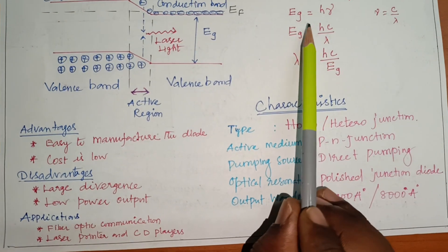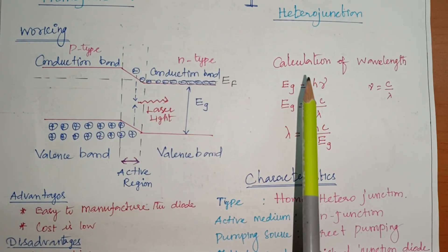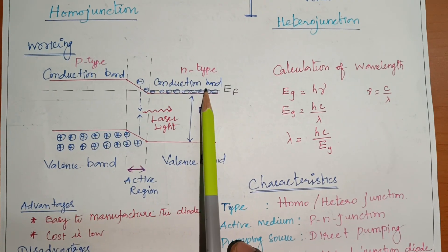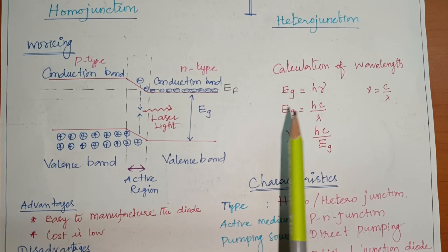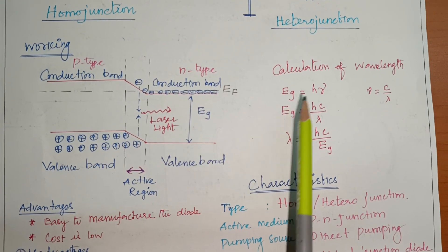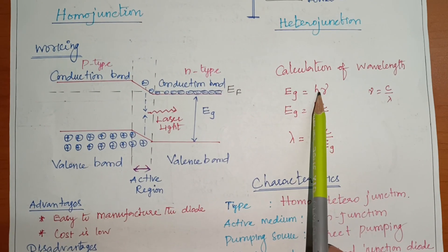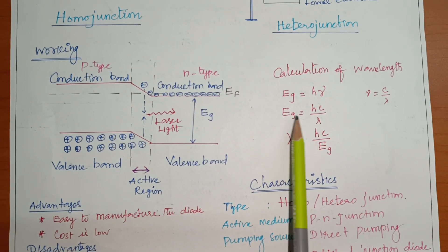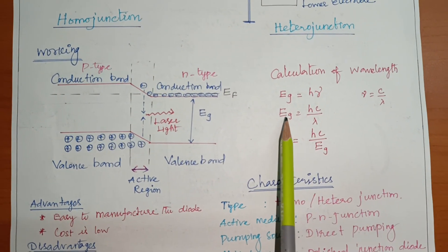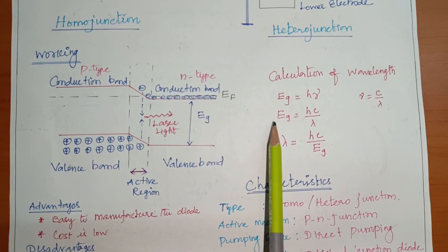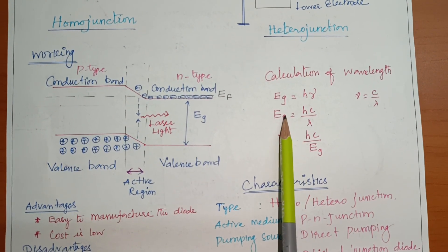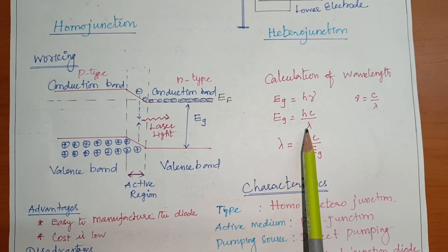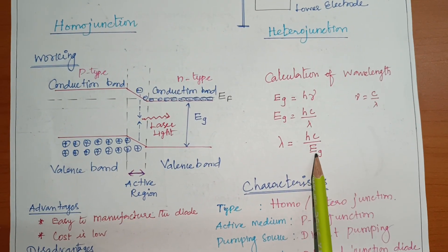To calculate the wavelength: the energy gap EG equals E2 minus E1, or EF minus EV. A photon is emitted with energy h·ν, so EG equals h·ν. Since ν equals c divided by λ, we get EG equals h·c divided by λ, and therefore λ equals h·c divided by EG. This formula gives the output wavelength of the semiconductor laser.